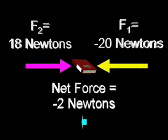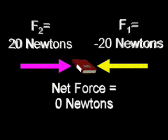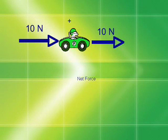Any movement of an object is the result of unbalanced forces. There is no net force on the book in this example, so the book will not move. We can say that these forces are balanced because there is no net force. Any object not in motion has balanced forces acting on them.